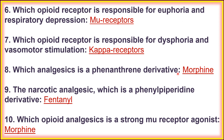Eighth, which analgesic is a phenanthrene derivative? Morphine is a phenanthrene derivative. Ninth, the narcotic analgesic which is a phenylpiperidine derivative is fentanyl.